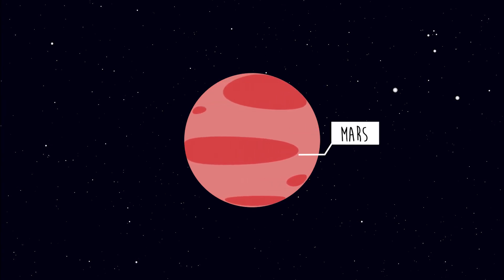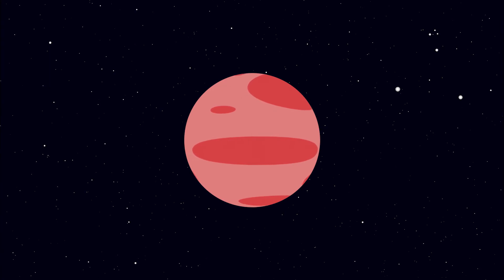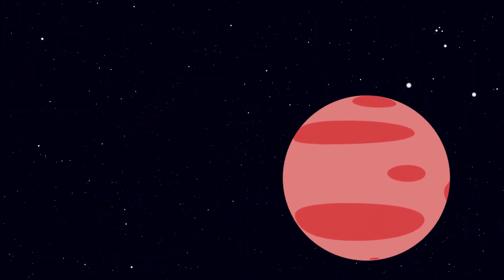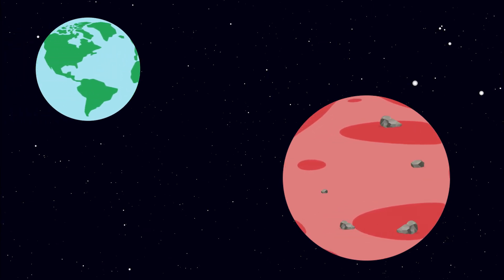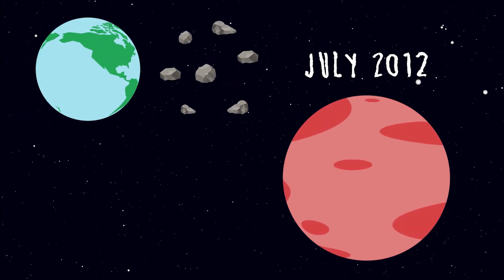Mars is the fourth planet from the Sun and the second smallest planet in the solar system. It is most commonly known as the red planet due to its reddish appearance. Little do people know that pieces of Mars have actually fallen to Earth in July 2012.